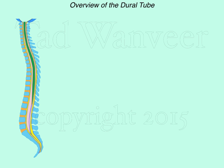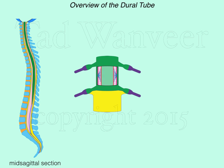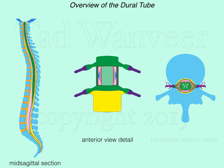This video is an overview of the dural tube, the three meningeal layers that encase the spinal cord. We'll look at the dural tube in three views: first a mid-sagittal section, followed by an anterior view detail, then a transverse section detail, and we will end by looking at a video of the dural tube moving in synchrony with the craniosacral rhythm.